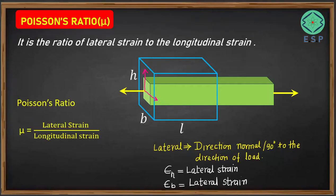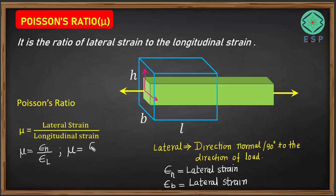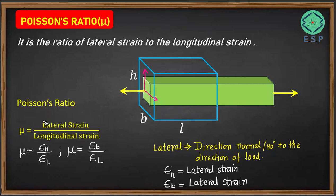Poisson's ratio is the ratio of lateral strain to the longitudinal strain. We can write mu as the strain in the height divided by strain in the length, or it can also be written as mu equals strain in the breadth divided by strain in the length. Both are the Poisson's ratio. The longitudinal strain is the strain in the direction of the force applied, and the lateral strain is the strain in the direction normal or perpendicular to the direction of the applied load.